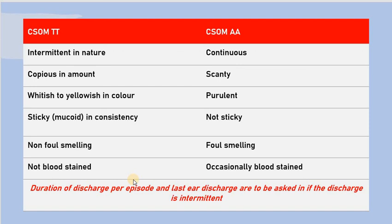As you go from the middle ear cavity to the attic and antrum, the epithelium becomes changed. The epithelium in the middle ear and the tubo-tympanic region is a respiratory epithelium with plenty of goblet cells. But in the attic and antrum, the lining is squamous epithelium. So the disease itself is called squamous cell disease because it involves the squamous temporal bone.